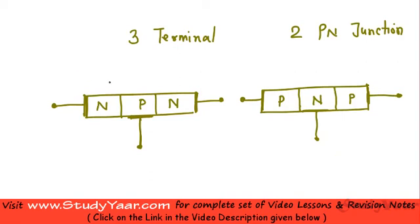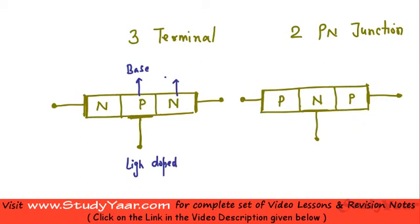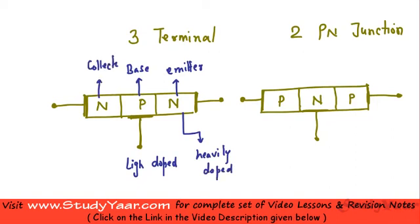Now your three regions in your transistor are referred to by different names. The middle region is known as your base — this region is very lightly doped. This region is known as your emitter and this is very heavily doped. And the last region is known as a collector, which is moderately doped. The same is the case for a PNP transistor: you have a base which is lightly doped, an emitter which is heavily doped, and a collector which is moderately doped.